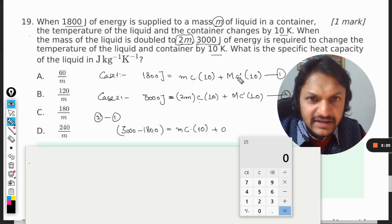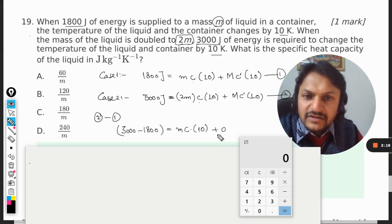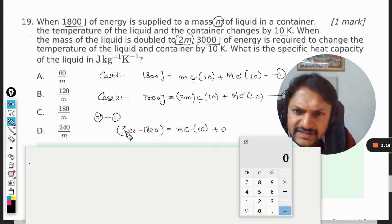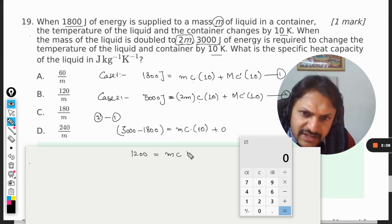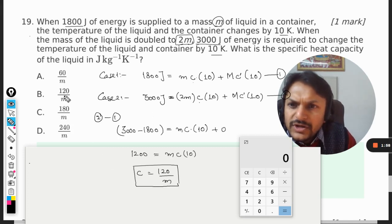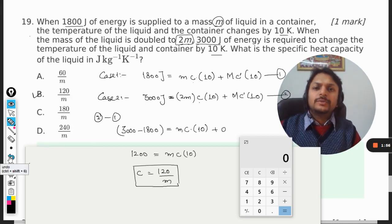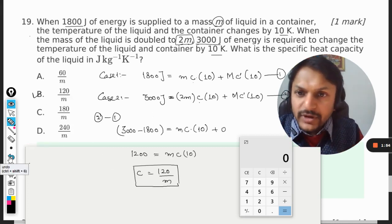So this minus this is 0, that will cancel. So this is coming out to be 1200 is equal to m into c into 10. So c is coming out to be 120 divided by m—120 divided by m. So our answer should be B, and this is how we do it.